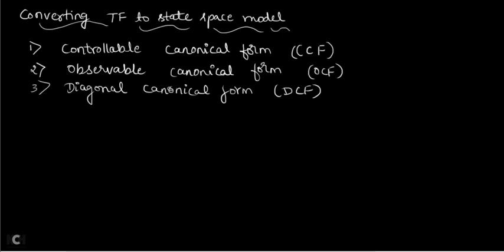Transfer function of any given system is always unique. But the state space model for any given system is not unique — you can get different answers. There are only a particular number of methods you need to follow to get those answers, and only if you get those particular answers can you say your solution is correct. So remember: transfer function is always unique, but state space model answer is not unique.